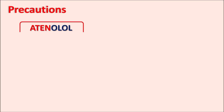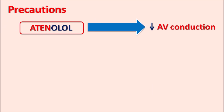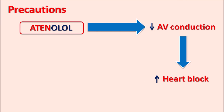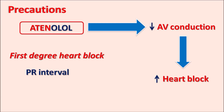What are the precautions? Atenolol is a cardiac depressant; it can reduce atrioventricular (AV) conduction. Generally AV conduction is controlled by the parasympathetic system. When the sympathetic system is inhibited, parasympathetic activity increases, resulting in decreased AV conduction. When AV conduction is reduced, it may result in an increased risk of heart block. In patients with first-degree heart block, the PR interval on the ECG is greater than 0.2 seconds. Giving atenolol in such patients can further increase heart block, leading to second and third degree heart block.